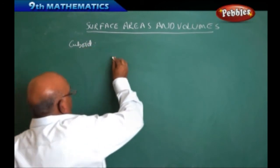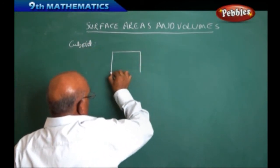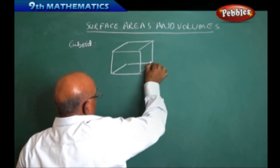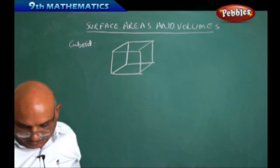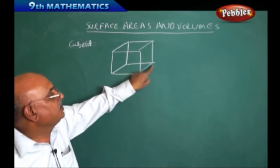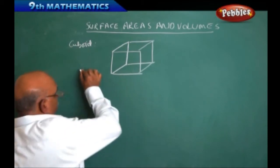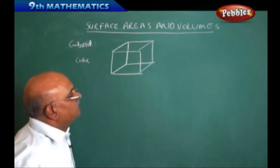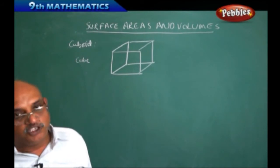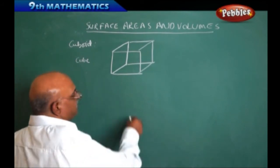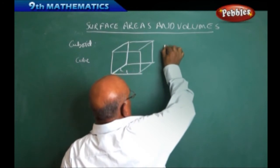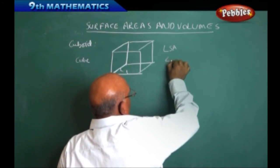A cuboid generally looks like this. In this cuboid, if all the sides are equal, then we are calling it a cube. For this cube, we are going to think about the lateral surface area as well as the total surface area and volume. Lateral surface area is basically related to the side L — the lateral surface area LSA equals 4L².